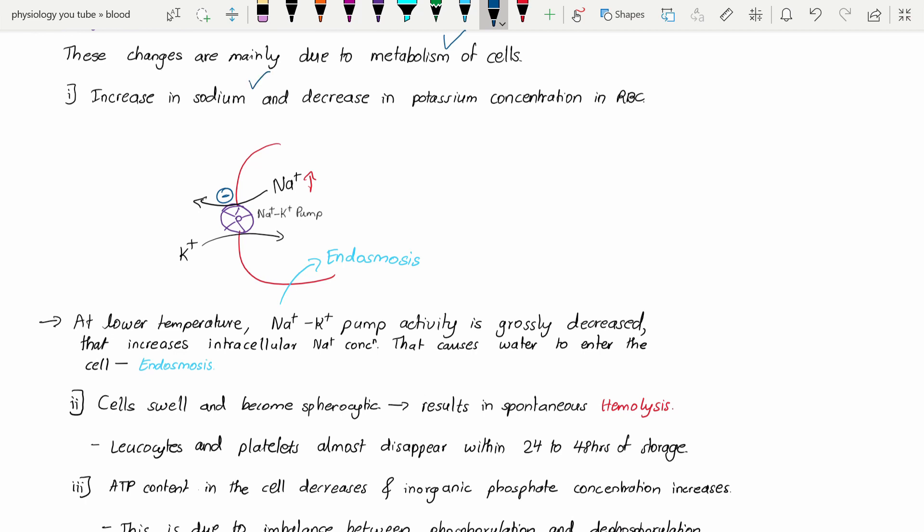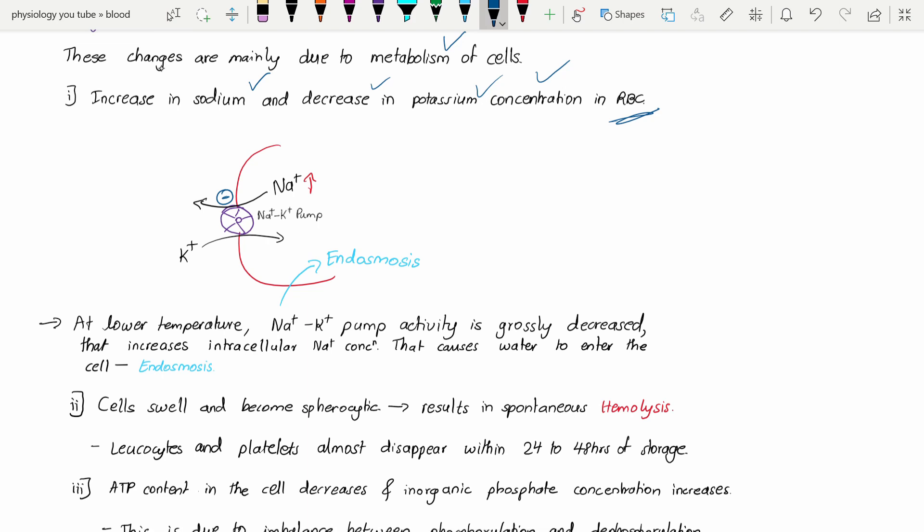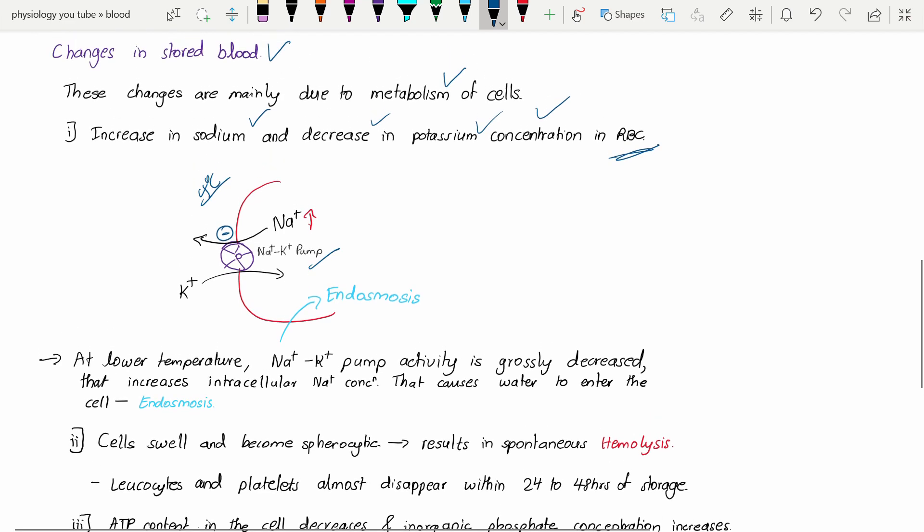Why? Because as you know, RBCs have a sodium-potassium pump. At low temperature, at 4 degrees Celsius, this pump activity is decreased. When there is decreased activity, sodium cannot go outside of the RBC and potassium cannot come into the RBCs, so the sodium level is increased.